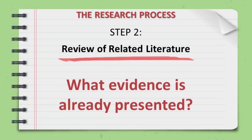Step two enables researchers to identify the precise aspects of the problem. Once a problem has been found, the researcher needs to find out more about it. It teaches the investigator about previous research, how they were conducted, and their conclusions. The researcher can now build consistency between his work and others through a literature review, which exposes the researcher to a more significant body of knowledge and helps follow the research process efficiently.